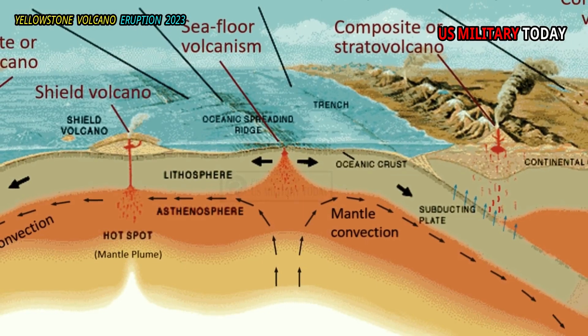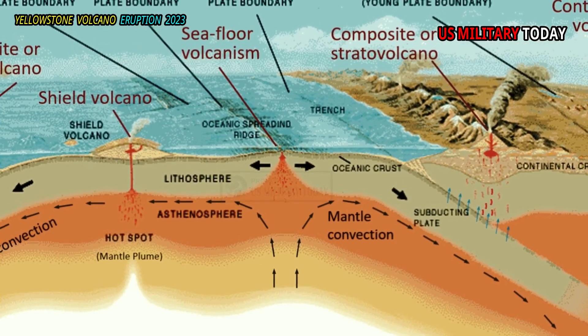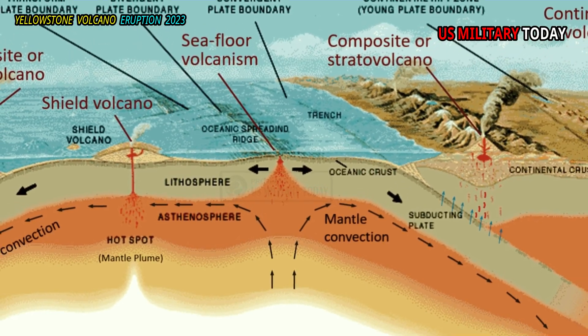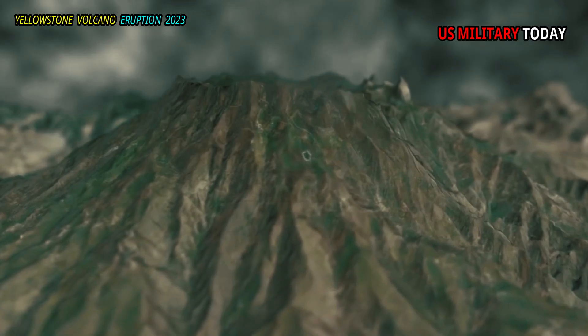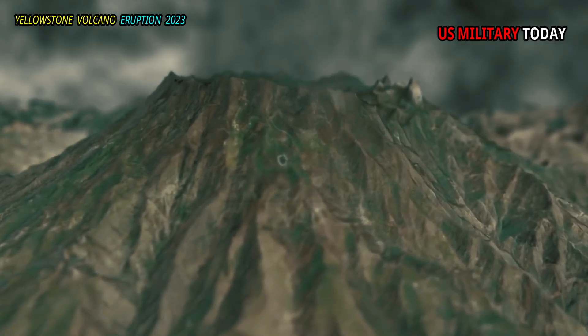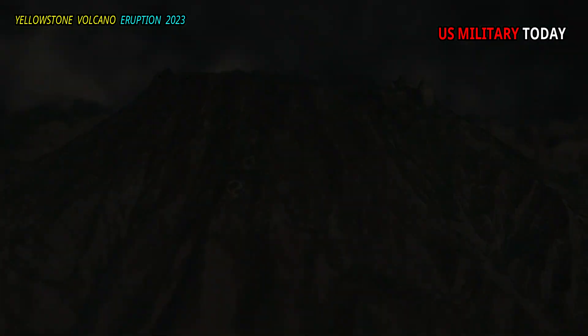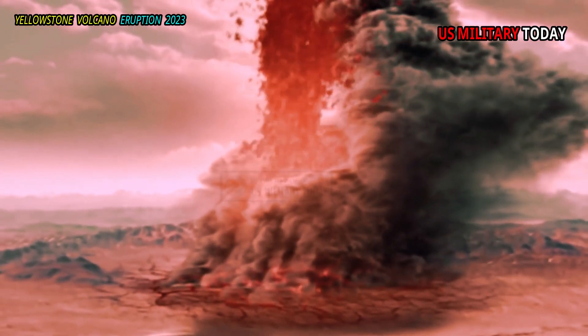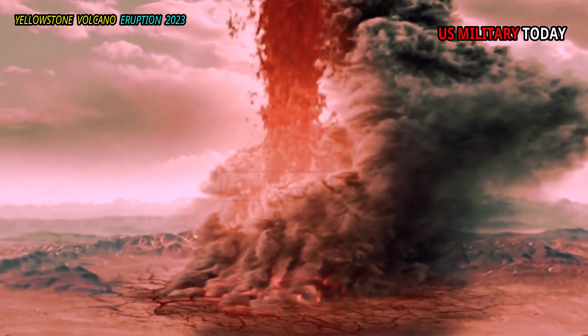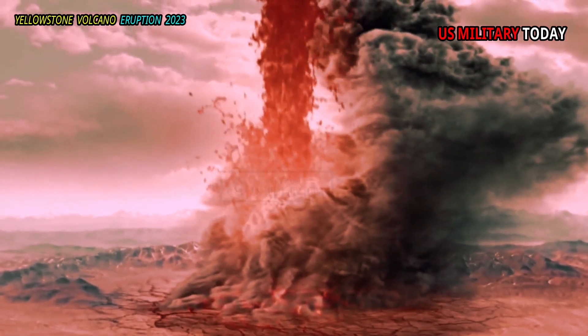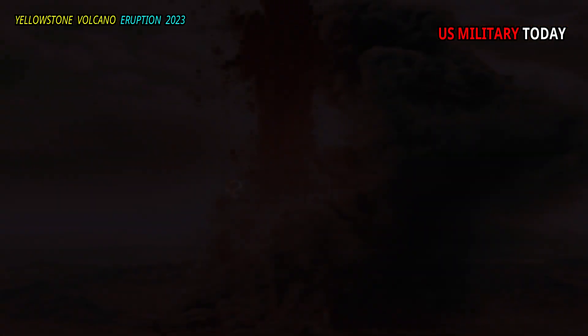Many volcanoes originate along tectonic plate boundaries, but Yellowstone's caldera is different. These are large hotspots where superheated magma in the Earth's mantle burns into the solid crust and rises to the surface.